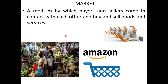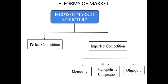Let's get a brief idea about what these forms of market structure are. These forms of market are classified on the basis of competition level. We have broadly classified a market into two categories: one as perfect competition and another as imperfect competition. In imperfect competition, we could see monopoly, monopolistic competition, and oligopoly — these are the three subcategories.